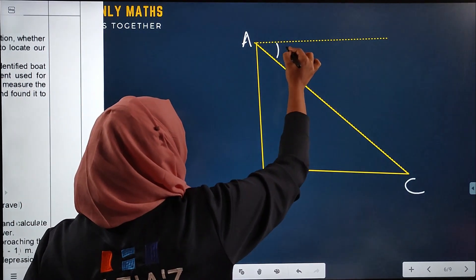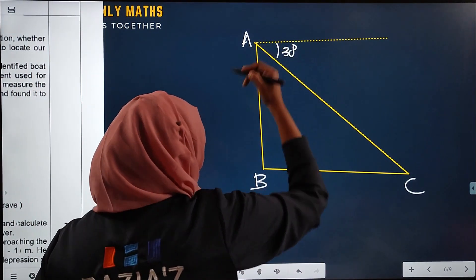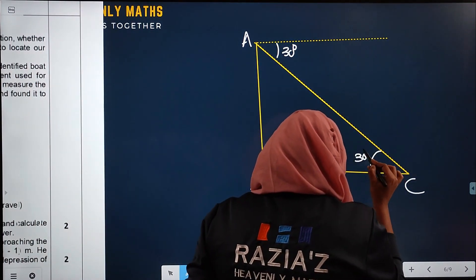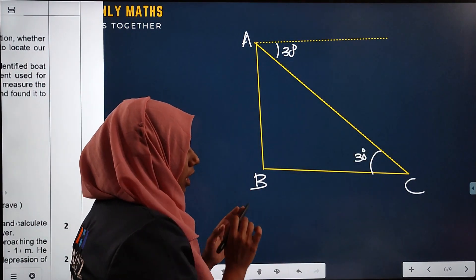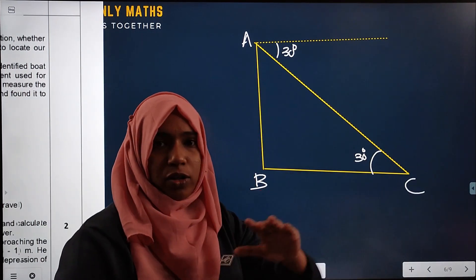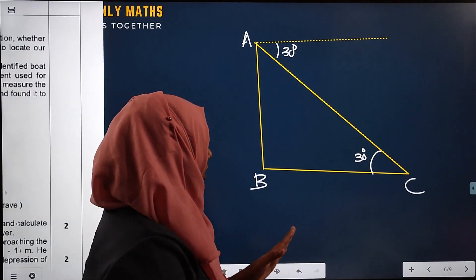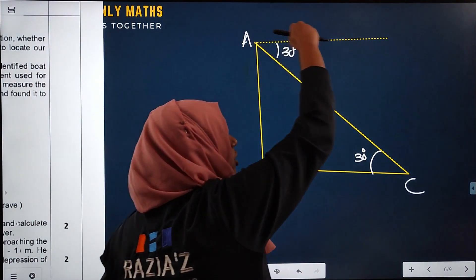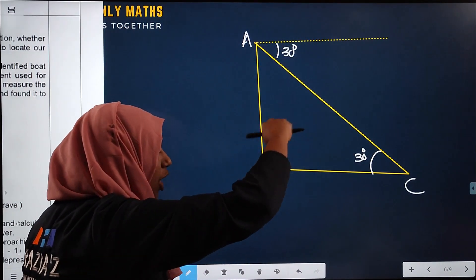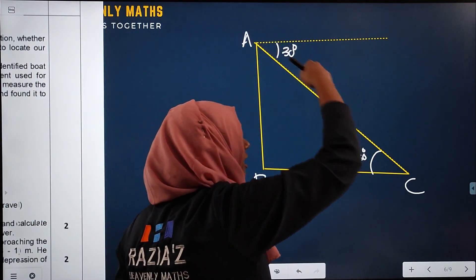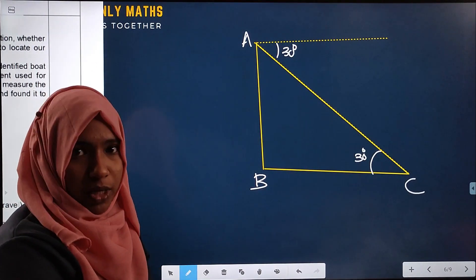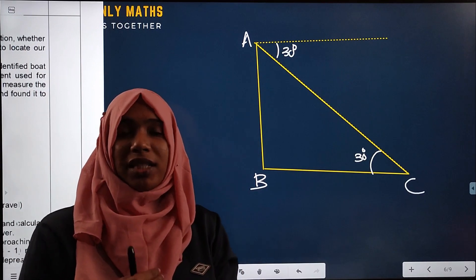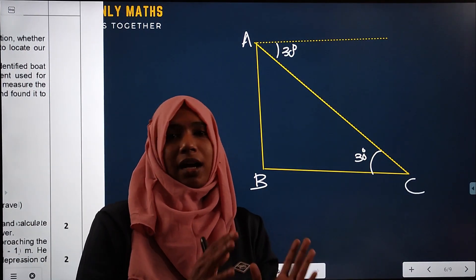The angle of depression is 30 degrees. The lighthouse is on the horizontal ground — we can consider the sea level as a vertical horizontal surface. That is the parallel line to the observer's position. They are parallel lines and the line of sight is a transversal.